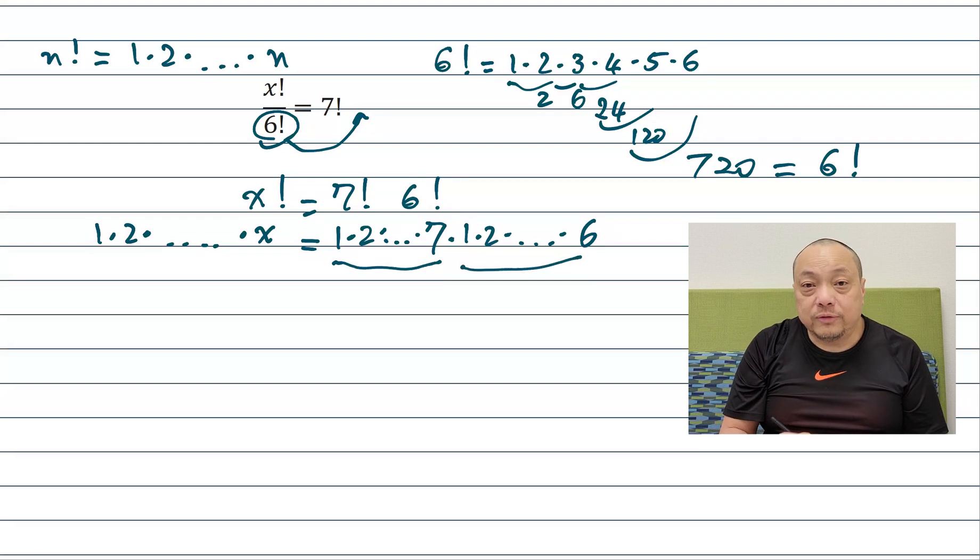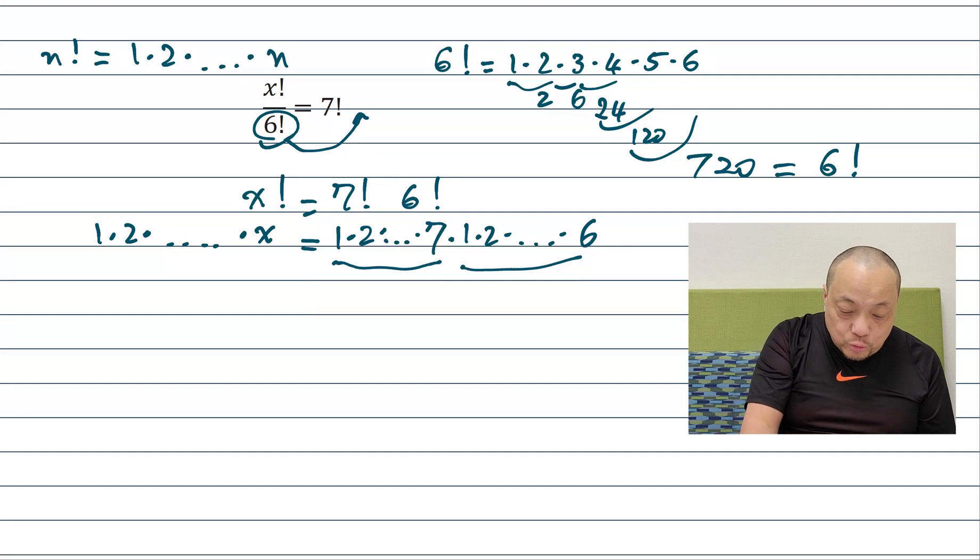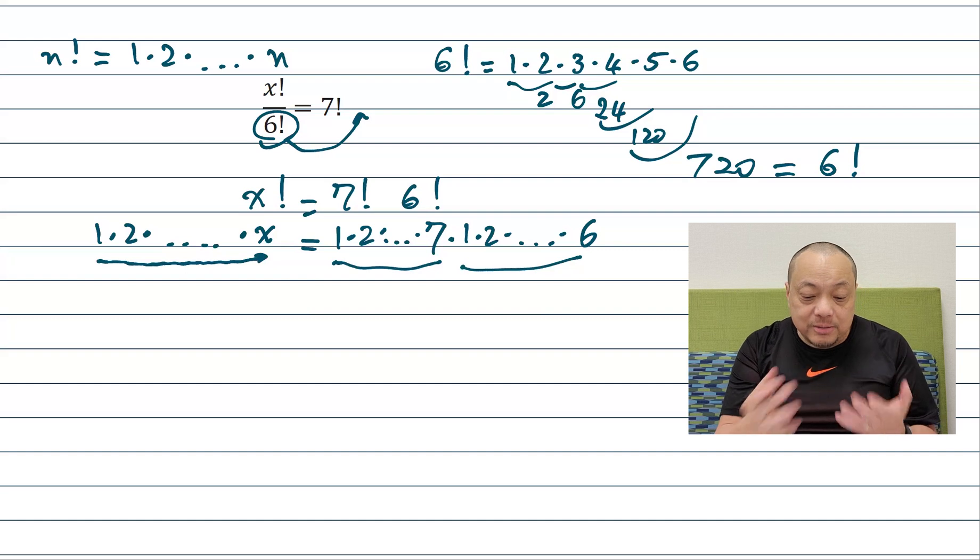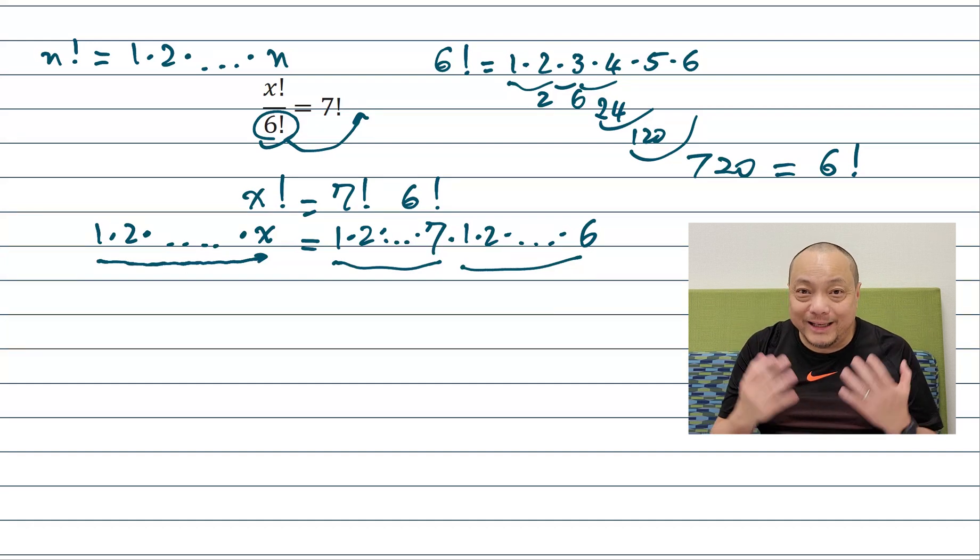On the right hand side I have 1, 2, 3, 4, 5, 6, 7 and then a reset - 1, 2, 3, 4, 5, 6 all multiplied together. Whereas on the left hand side I have 1, 2, 3, 4, 5, 6, 7 and then some more going all the way to x. No reset. No restart at 1. So there's a mismatch. So it's not obvious what x is.